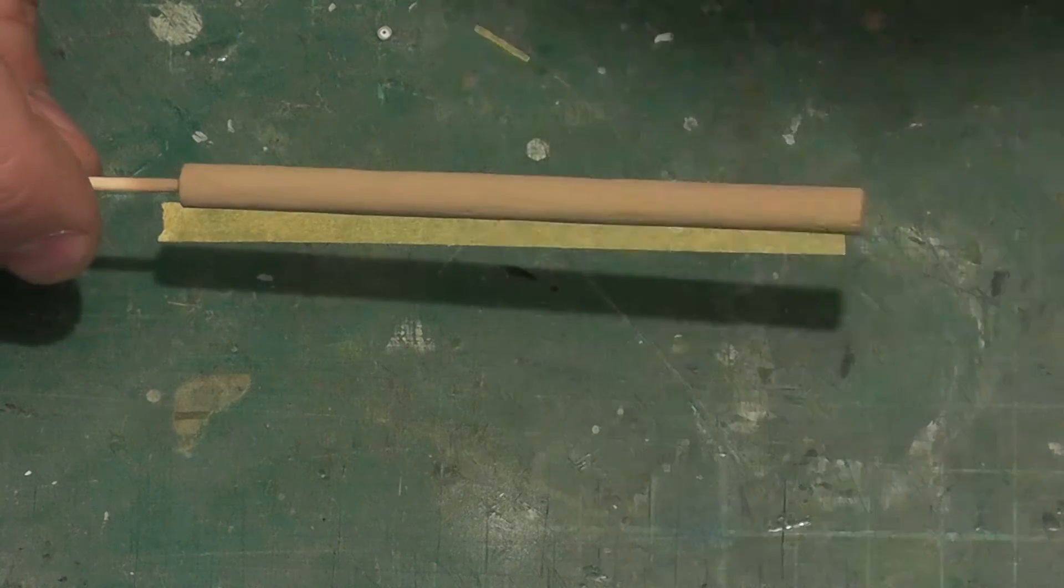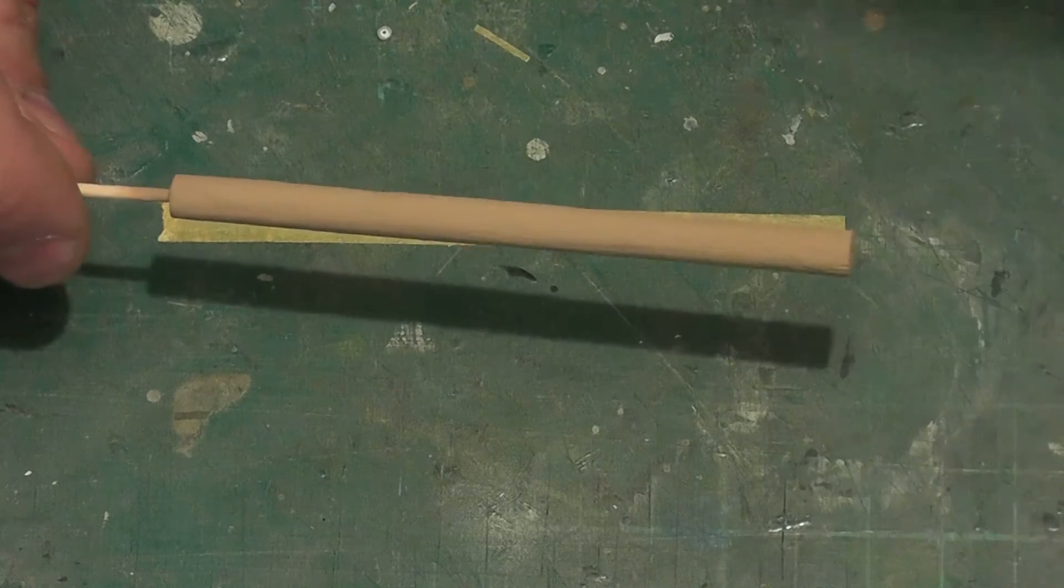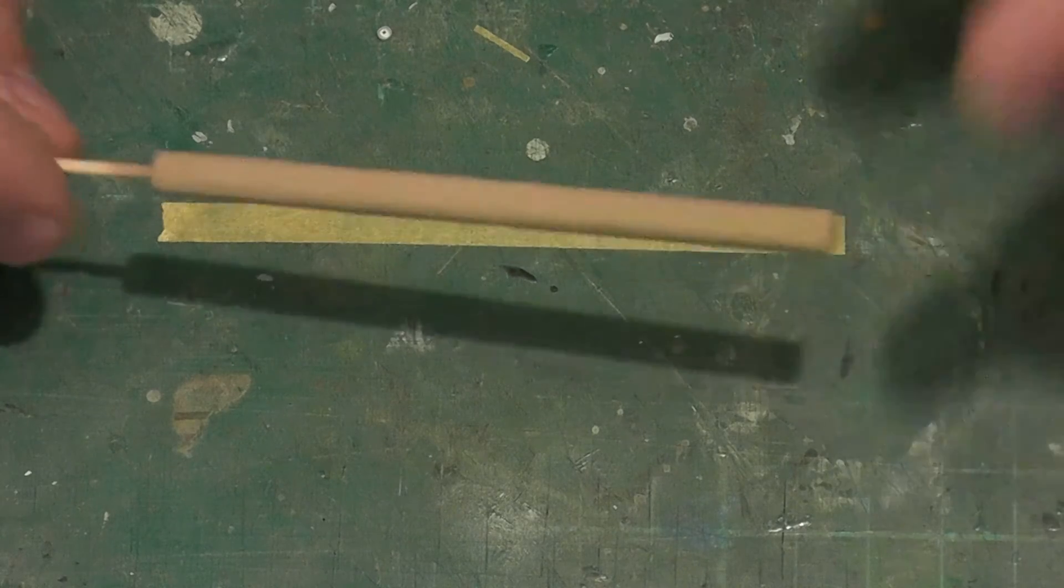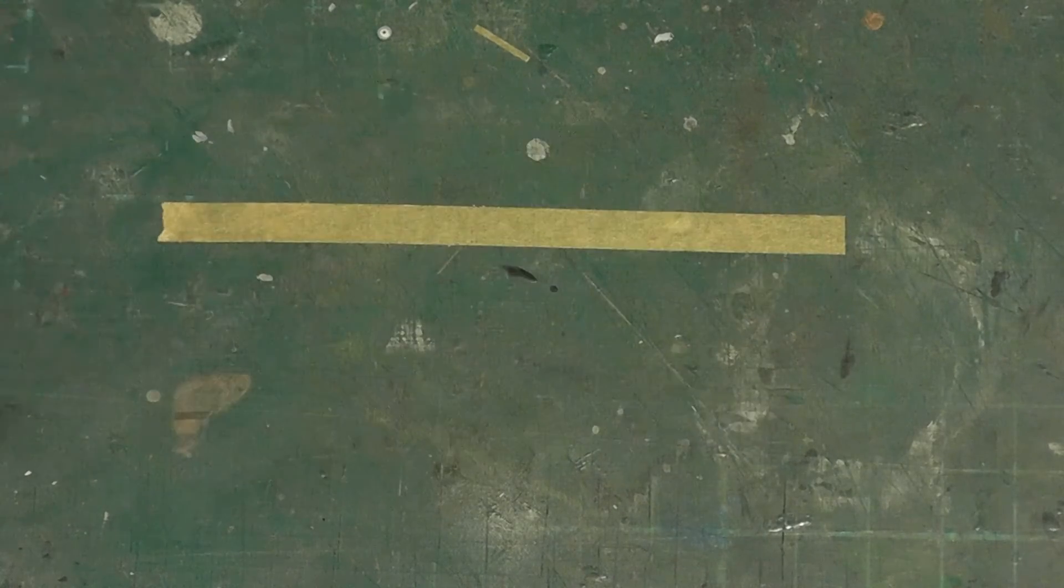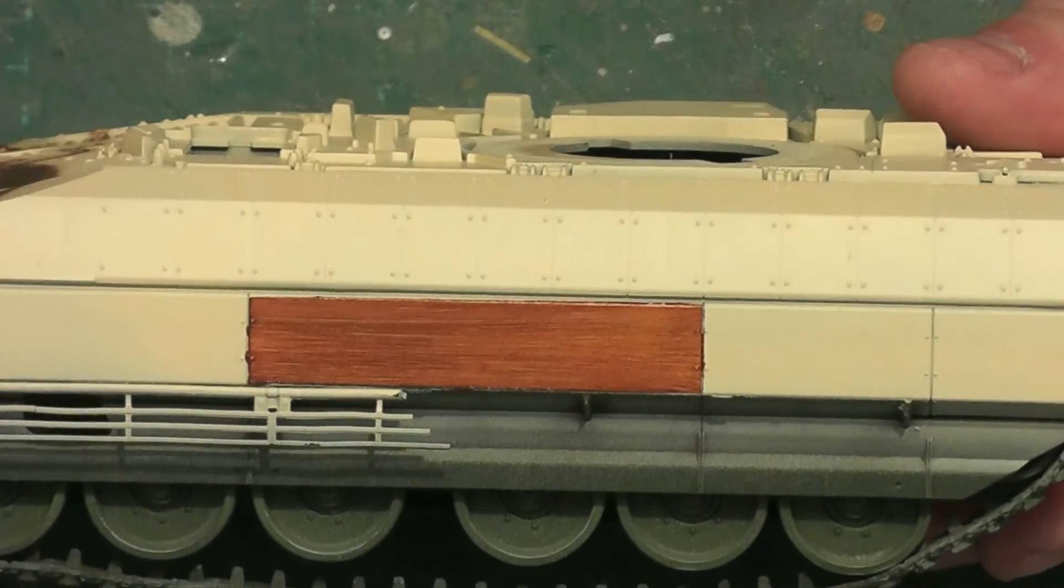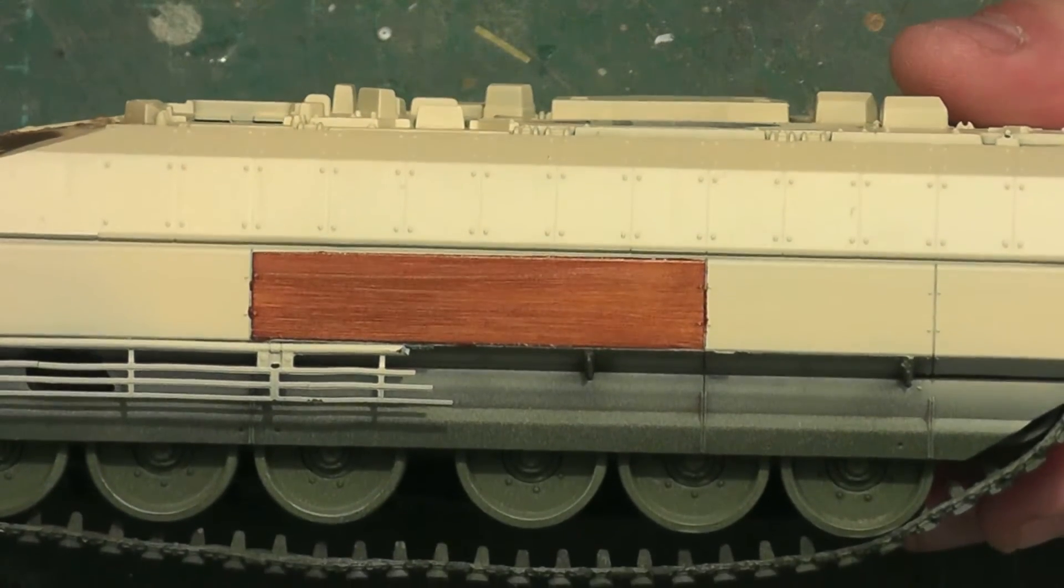Now, at this point you can choose a lighter colour, a darker colour, it depends on what the final colour you want your wood, your log to be. You can see the colour I've achieved here is quite a reddy-brown colour. So I'm happy with that, I think that's going to look quite nice on the rear of the tank.